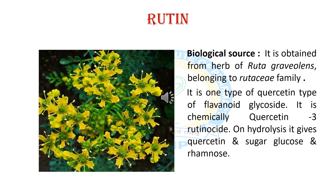Now we will discuss the second phytoconstituent, rutin. It is obtained from the herb of Ruta graveolens, belonging to the Rutaceae family. It is a type of quercetin or flavonoid glycoside, chemically known as quercetin-3-rutinoside. On hydrolysis, it gives quercetin and sugars like glucose and rhamnose.